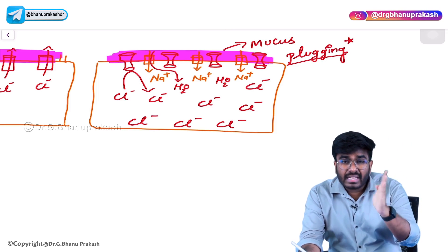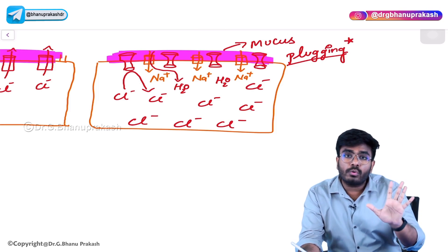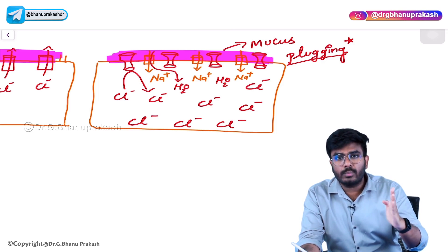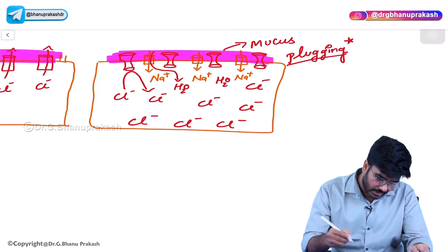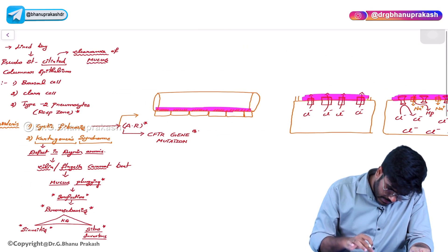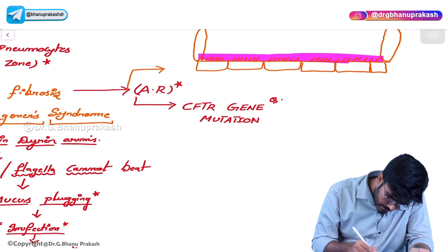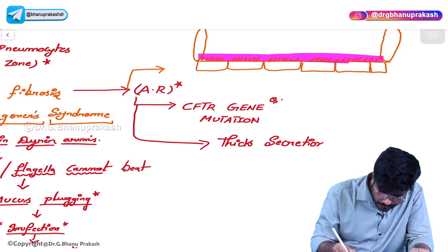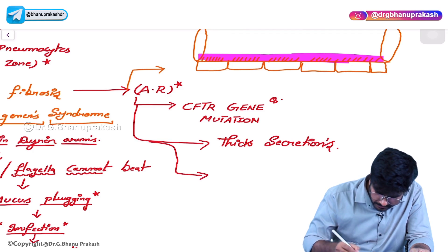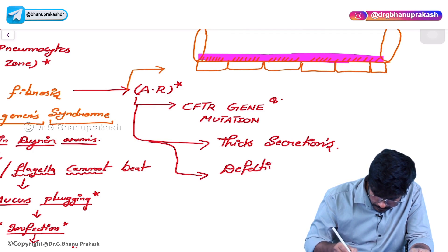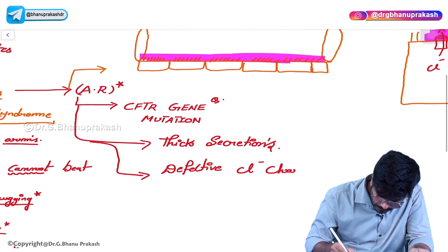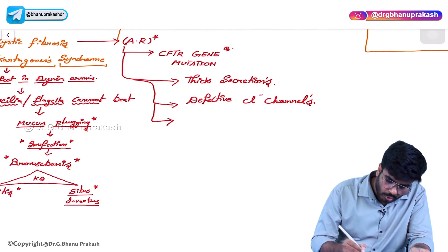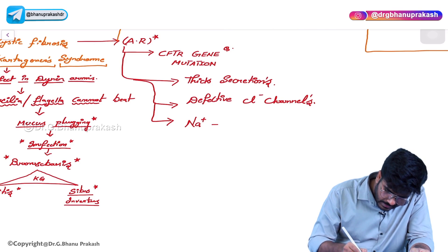Can such a thick mucus plug be easily cleared by the cilia? No. Even though there is no anatomical deformity or structural deformity in the cilia, the cilia cannot clear the mucus because the mucus is so much thicker. So we can say cystic fibrosis is a condition of thick secretions due to defective chloride channels, because of which sodium enters into the cell.